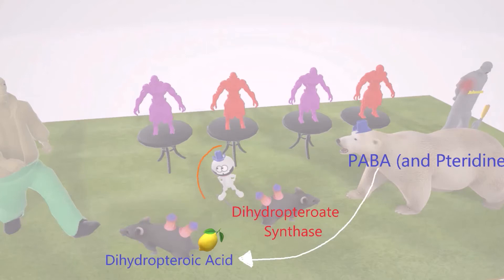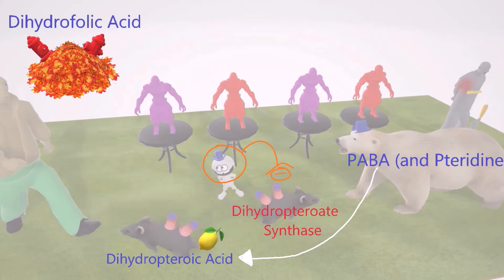So PABA and pteridine are converted by dihydropteroate synthase into dihydropteroate acid. The sulfonamide character inhibits this step. Dihydropteroate acid is then converted to dihydrofolic acid, represented by foliage with two hydrants in it.